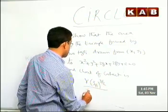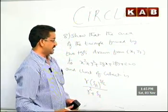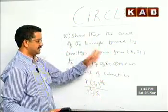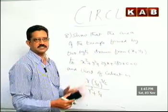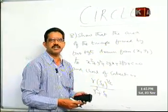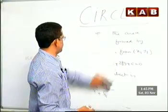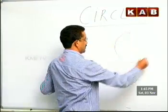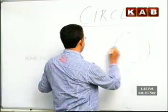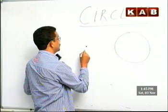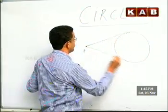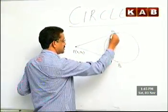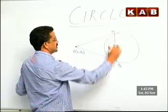When you look at this, it's appearing to be difficult, but see how it is easy. What is it asking? Look at this question carefully. A circle is given, right? We'll take a circle. This is the point from where tangents are drawn. X1, Y1. Standard notation, we'll keep PAB. AB is chord of contact. He is asking the area of this triangle, area of PAB.